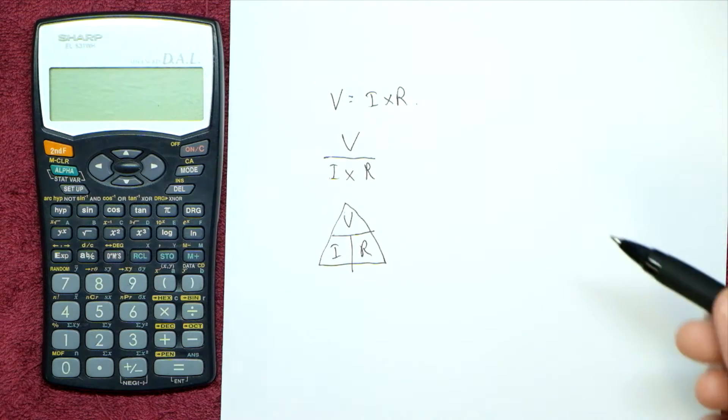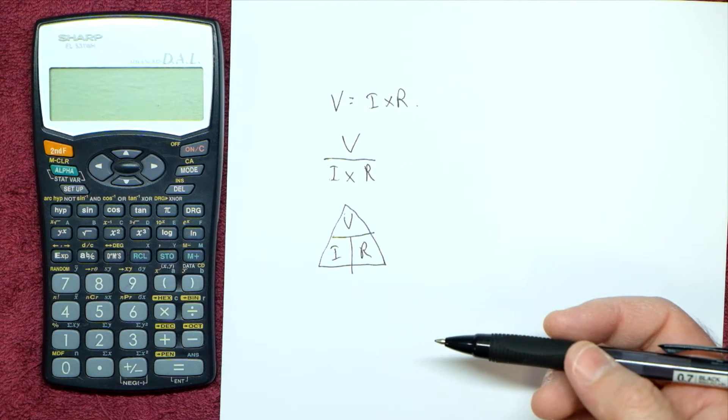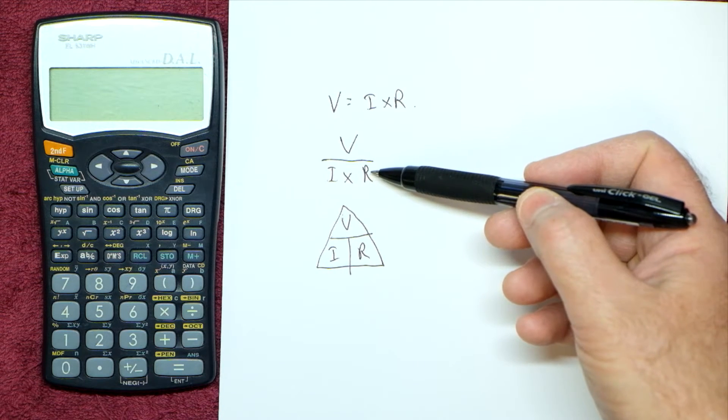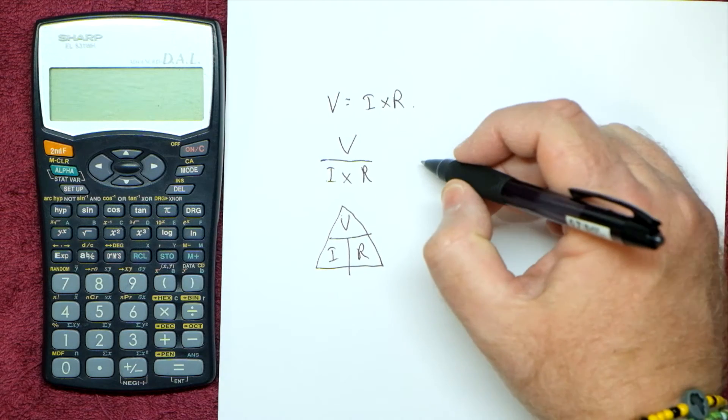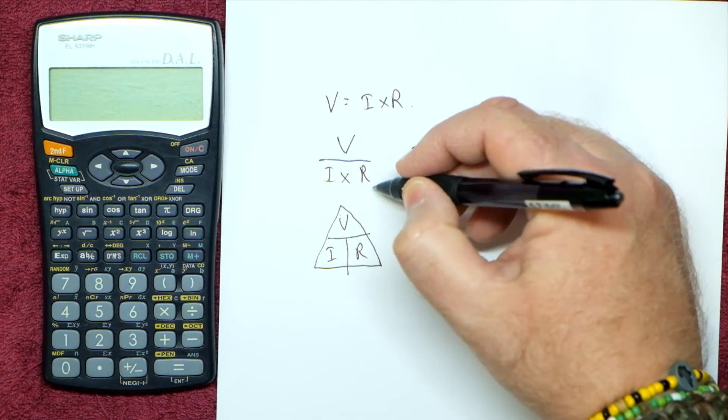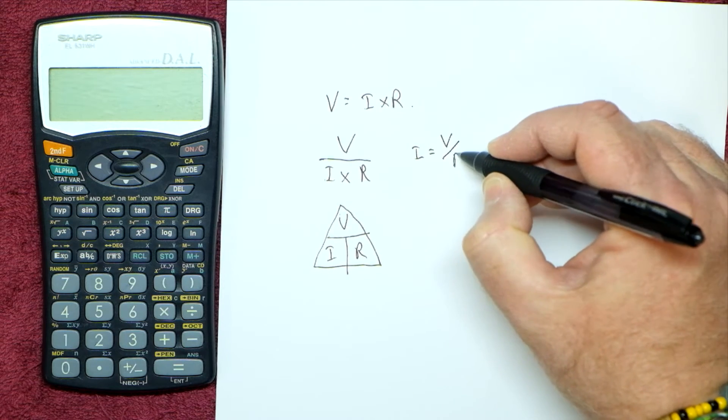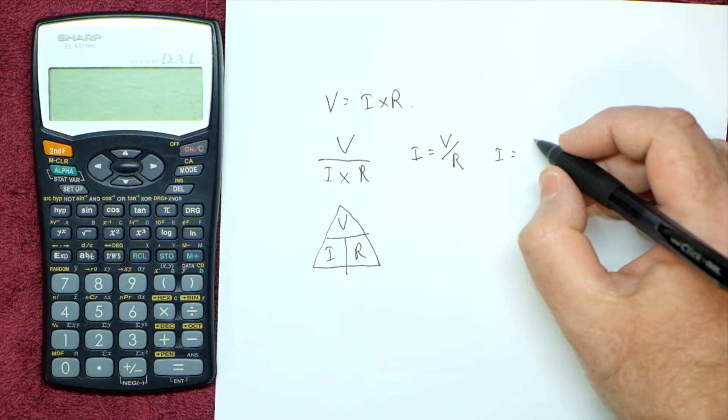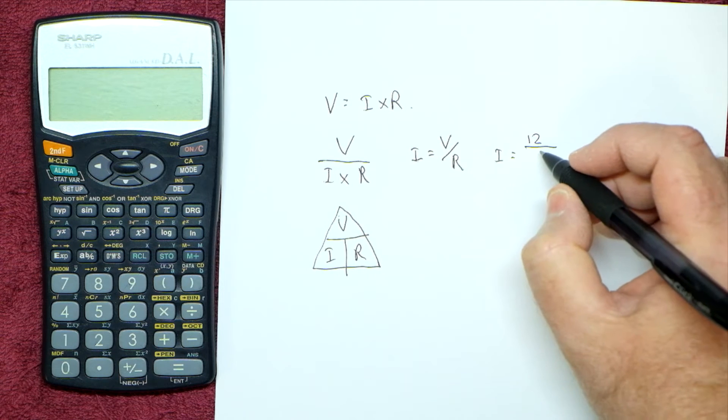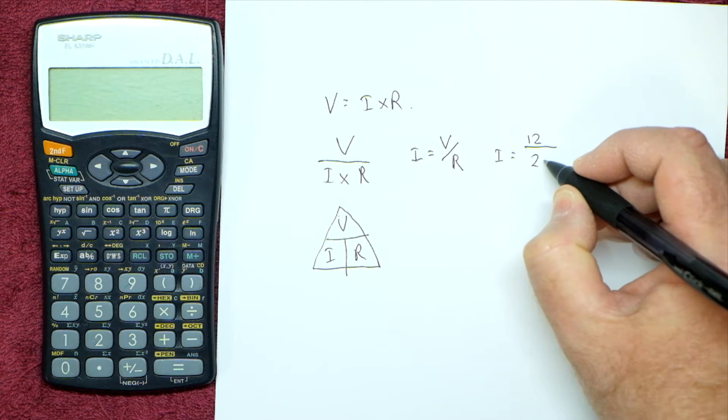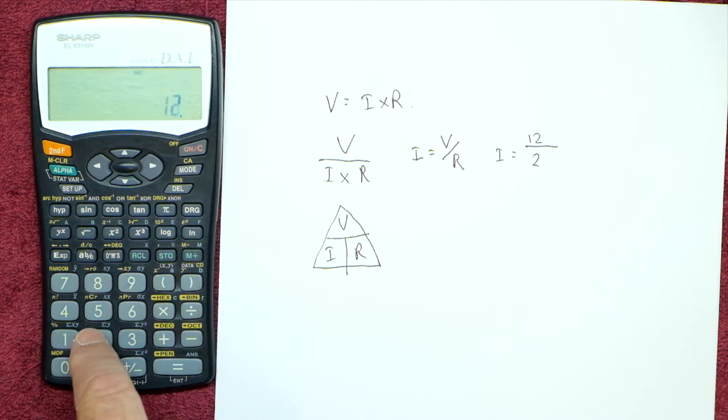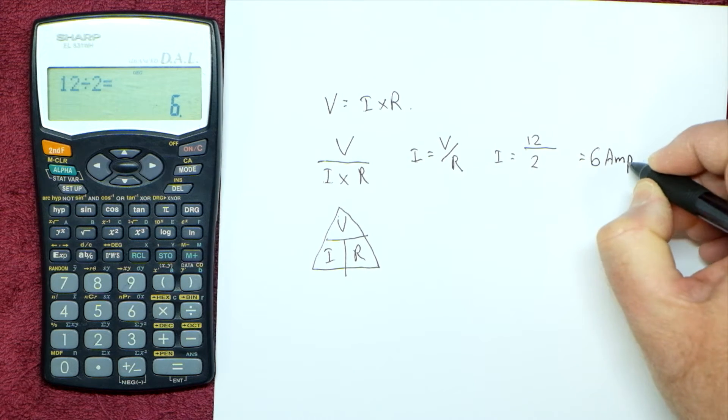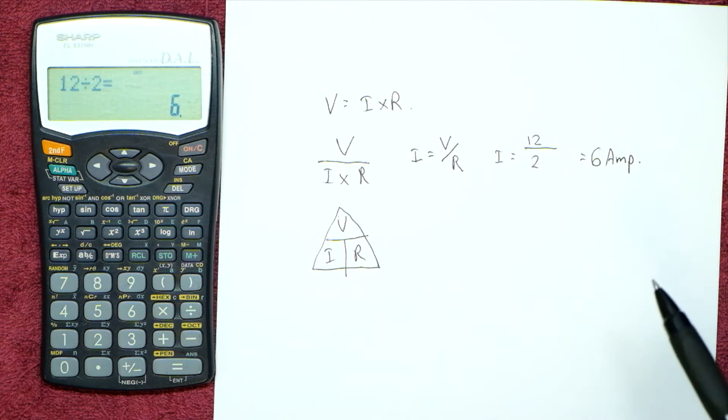So what this basically means, if we want to know what the current is through a circuit, we know the voltage and we know the resistance of the circuit, then we can work out the current. So basically for current, I equals V over R. So for a known circuit such as 12 volts and let's say it's a 2 ohm circuit, 12 divided by 2, we've got 6 amps.